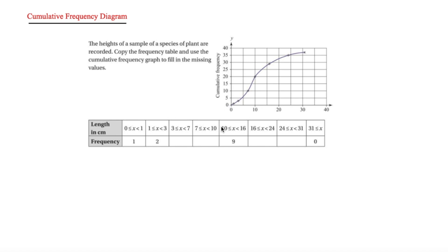The final part of single variable data is the cumulative frequency diagram. This is another way to display continuous data — it takes the sums of all the frequencies and plots them in an always-increasing curve. Drawing a dotted line from the y-axis can help you estimate any required quartile or value. Points are plotted at the end of each interval, not the midpoint — for example, a point is plotted at 10 and another at 16 because those are the ends of their respective intervals.